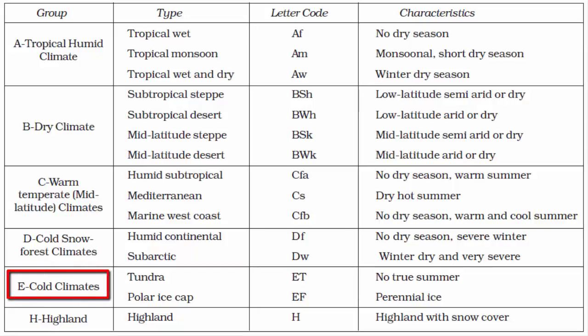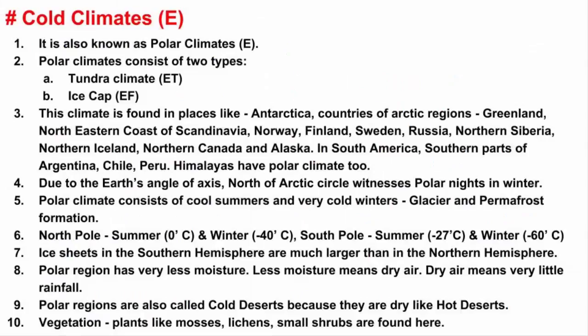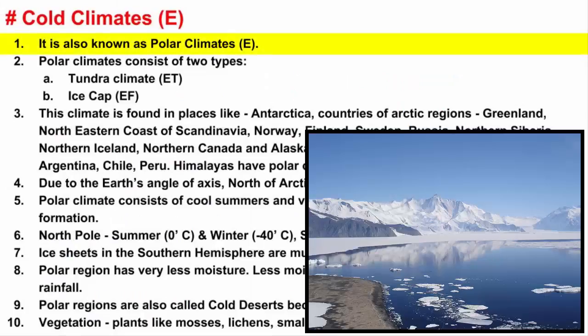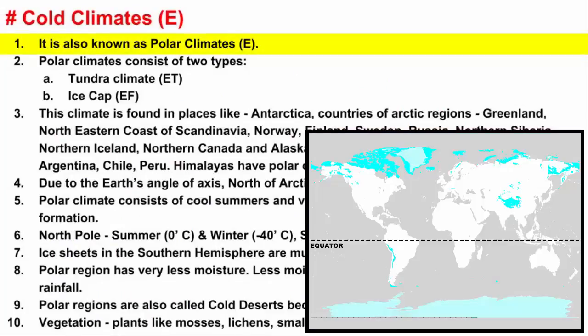In this video, we will learn about Group E of Köppen Climatic Classification. Group E stands for Cold Climates, also known as Polar Climates.